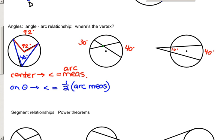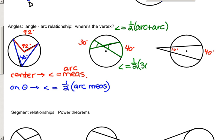When the angle has a vertex inside the circle but not at the center, the angle measure equals one-half the sum of both intercepted arcs — the intercepted arc of the angle itself as well as the intercepted arc of the vertical angle. This pair are vertical angles and they would be congruent. In this diagram, the angle measure would be equal to one-half of 30 plus 40 degrees, so the angle measure would be 35 degrees.